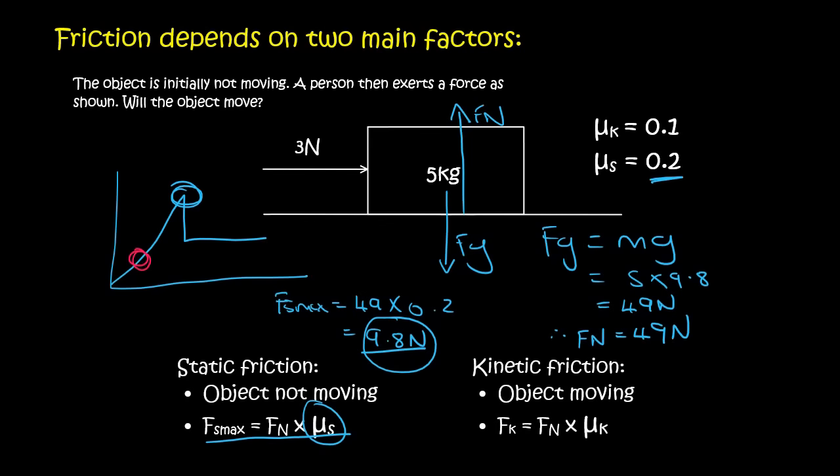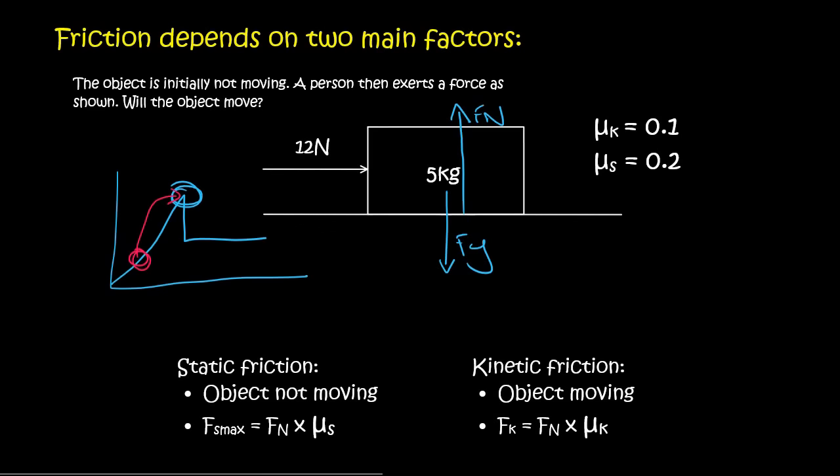So if you wanted that object to start moving, you would have to go beyond 9.8. If the person extends or increases the force to 12 Newtons, then the object will start moving, because the maximum friction that that object can have—remember, friction is the thing that's trying to stop the object from moving—the maximum for this system is only 9.8. So if you exert 12 Newtons, then you can cause the object to move.